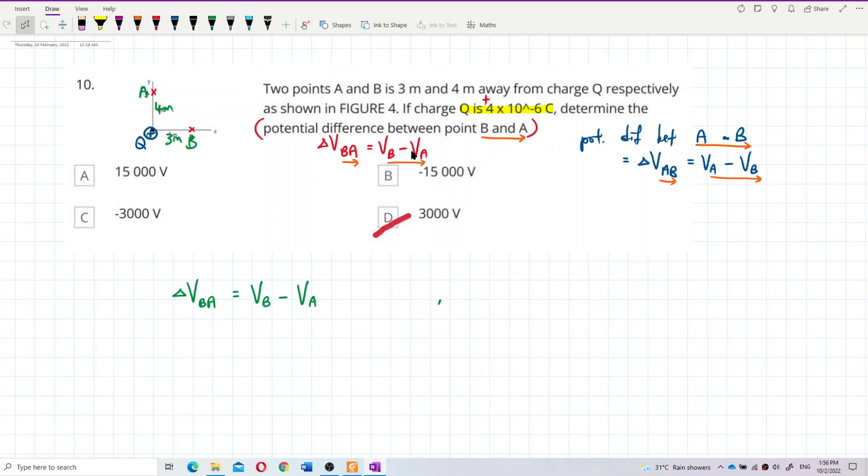So for potential at B is kQ over r_B, distance to point B, and then minus, also using the same charge, kQ over r_A, distance to point A.